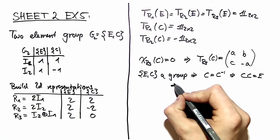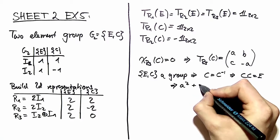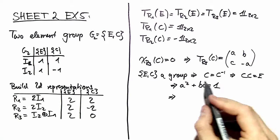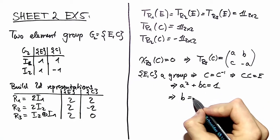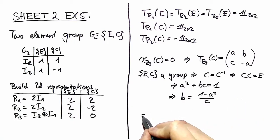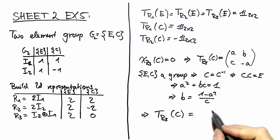So we have an additional constraint, meaning A squared plus B times C is equal to 1, which means regrouping, rewriting this, we have B is equal to (1 minus A squared) over C.